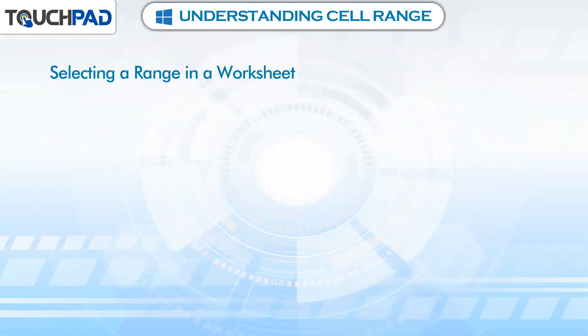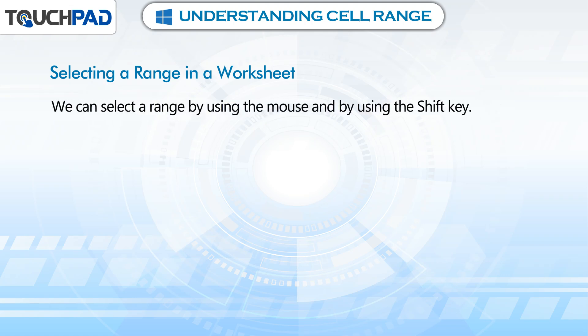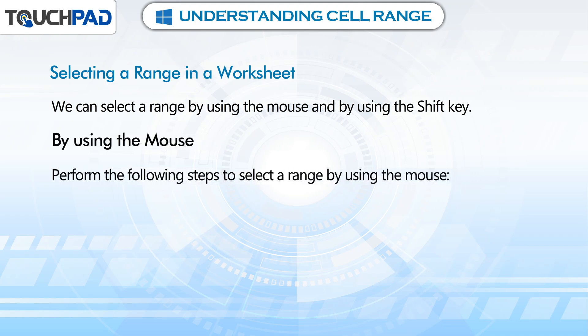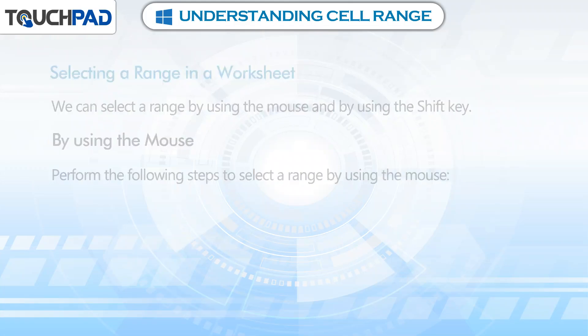Selecting a Range in a Worksheet. We can select a range by using the mouse and by using the Shift key. By using the mouse, perform the following steps to select a range by using the mouse.